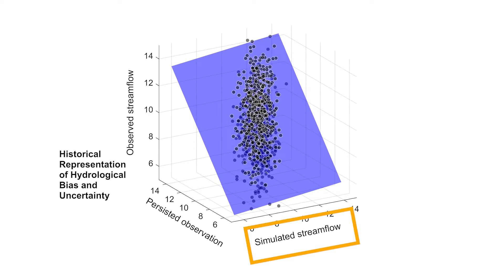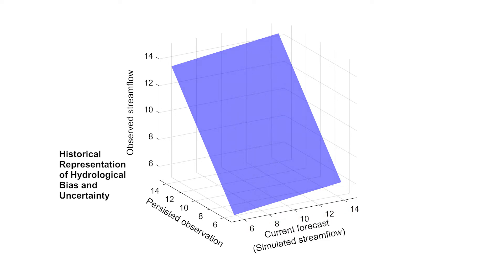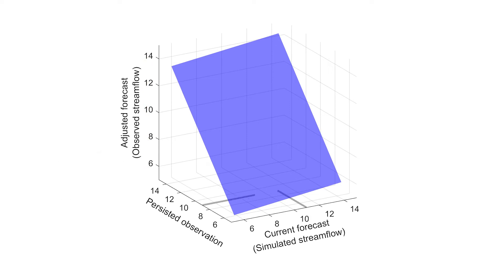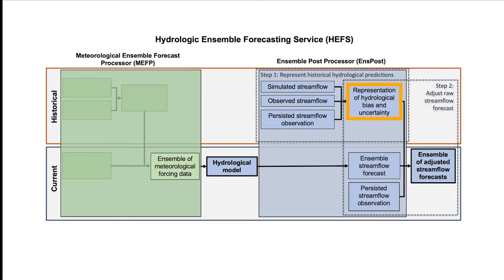We assume that the current streamflow forecast is analogous to our simulated streamflow, and we assume the historical observed streamflow is analogous to the current adjusted streamflow forecast. We use the plane as a guide to get a forecast adjusted for the persisted observation and bias. This provides ONSPOST with an initial adjusted forecast of the streamflow at 6 hours. In our example, this is 9 CFS. In doing this, ONSPOST has used the historical representation to adjust for bias and assimilate the persisted observation with the current streamflow forecast.